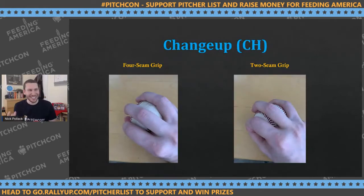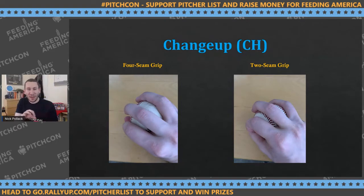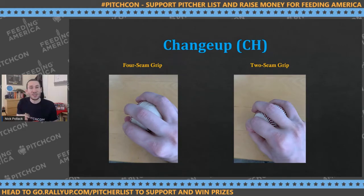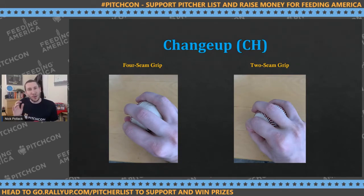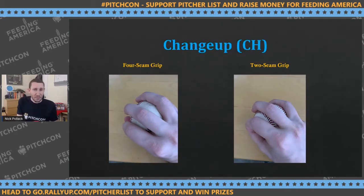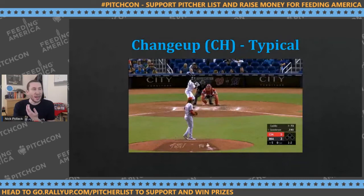For change-up grips, the four-seam grip uses your ring and middle finger making the grip with a circle formed by your index and thumb. The two-seam grip on the right is similar but positioned over the two-seam orientation. These are essentially four-seam and two-seam grips, but using your middle and ring finger instead. Some pitchers can't throw these because they're throwing with their ring finger — no other pitch does that — which is why some guys can't develop a good changeup.